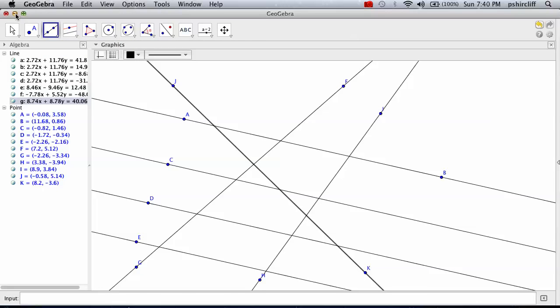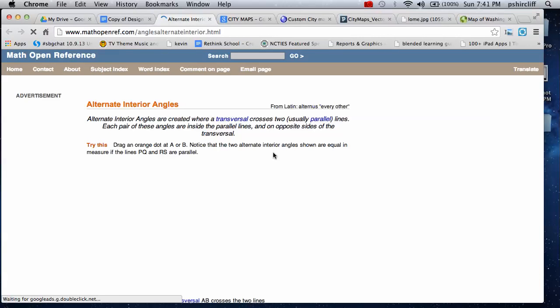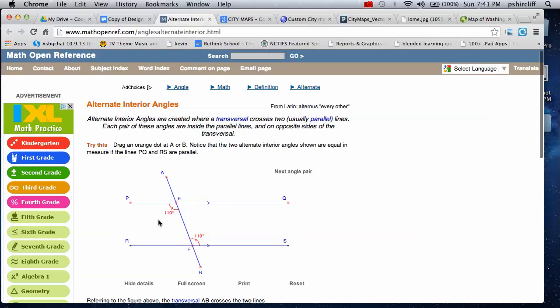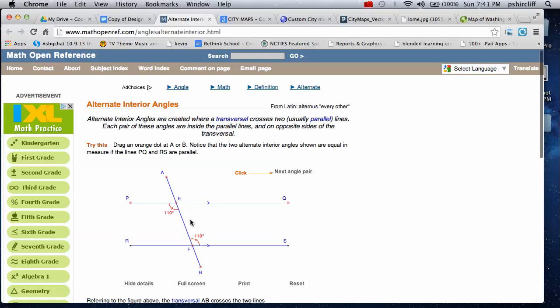We're going after some vocab. So, alternate interior angles - alternate interior angles are on the inside of a couple of parallels and they're on alternate sides of the transversal, the thing that's cutting it.